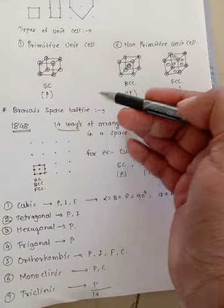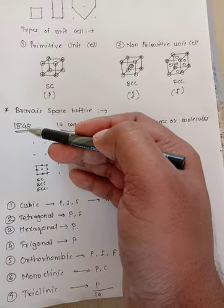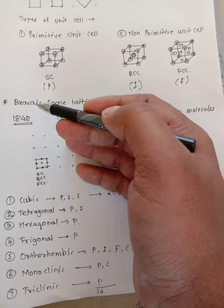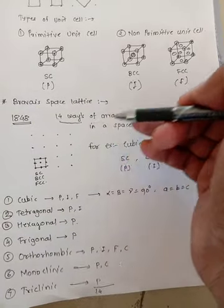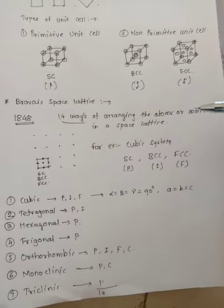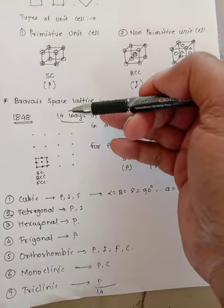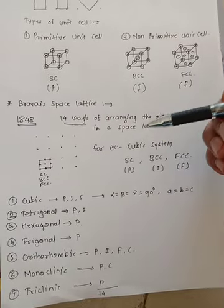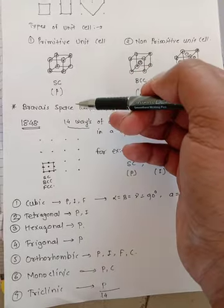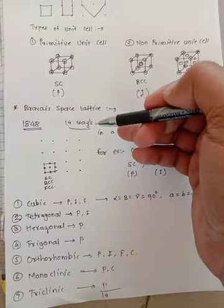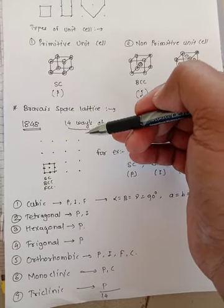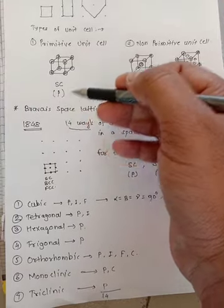Our next point is Bravais space lattices. In 1848, Bravais — a scientist — suggested that there are only 14 ways of arranging atoms or molecules in a space lattice. These 14 ways are known as Bravais space lattices, meaning there are a total of 14 types of sub-lattices or 14 types of unit cells. These 14 types of unit cells are known as Bravais space lattices.